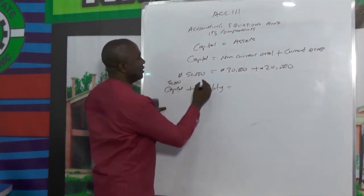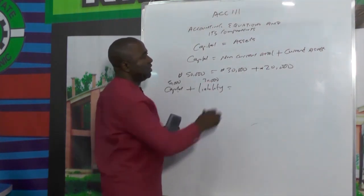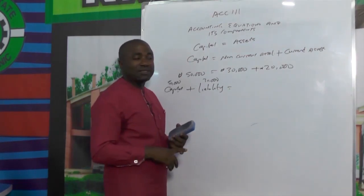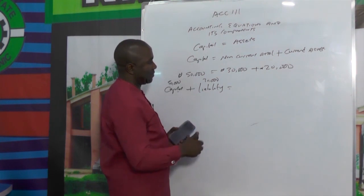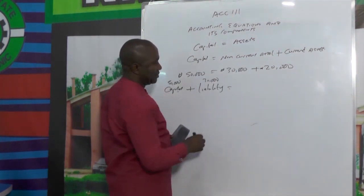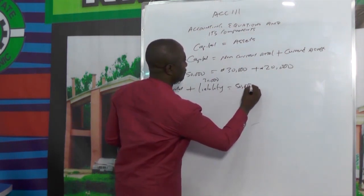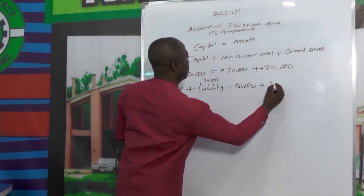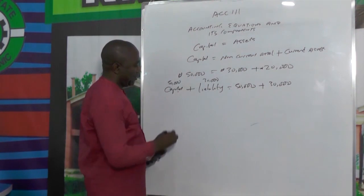Assuming this capital is 50,000 and the liability is 30,000. For the non-current asset — don't forget we gave examples: non-current assets are land and buildings, motor vehicles, tools, and so on. This 30,000 on current assets will now be increased. Assuming it's increased to, let's say, 50,000, then the non-current assets will also be 30,000. Let me demonstrate it in a better way.